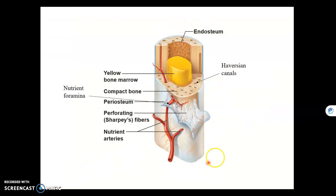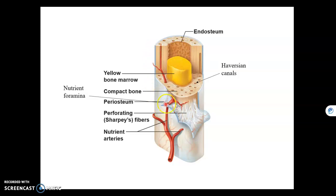Here we're looking at a piece of diaphysis. The medullary cavity is filled with yellow bone marrow, and lining it is the endosteum. The periosteum lines the outside of bone — you can see it getting peeled off here. These fibers holding it tightly to the bone are called Sharpey's fibers, or perforating fibers.